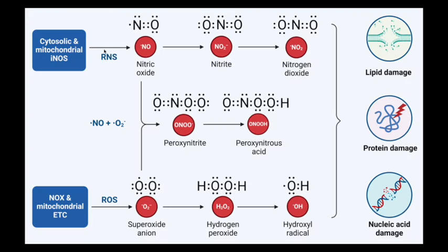The reactive nitrogen species include nitric oxide, nitrates, and nitrogen dioxide. The reactive oxygen species include superoxide anions, hydrogen peroxide, and various radicals, which also combine to form additional free radicals. These result in damage to the mitochondria — the most important mode of damage — including lipid damage to the membrane, nuclear damage, and damage to enzymes.